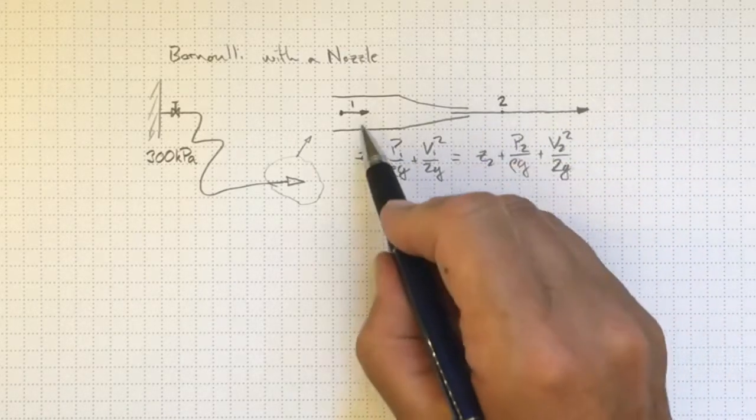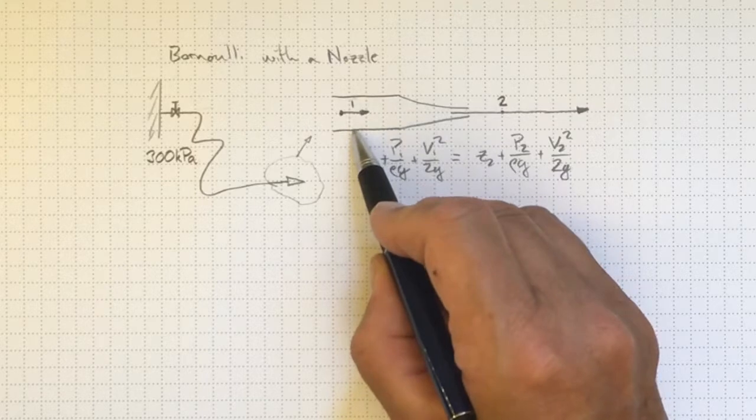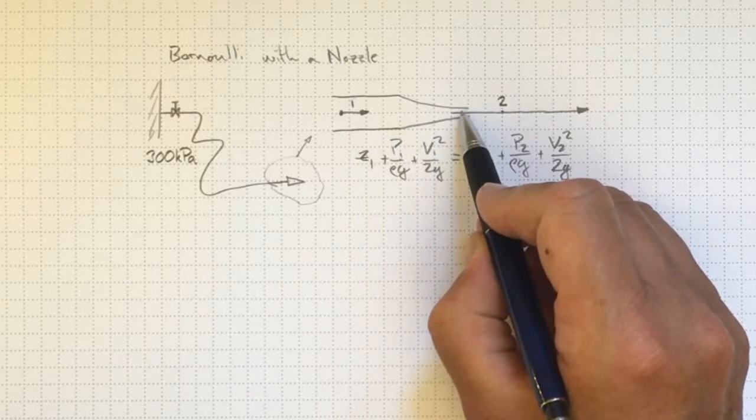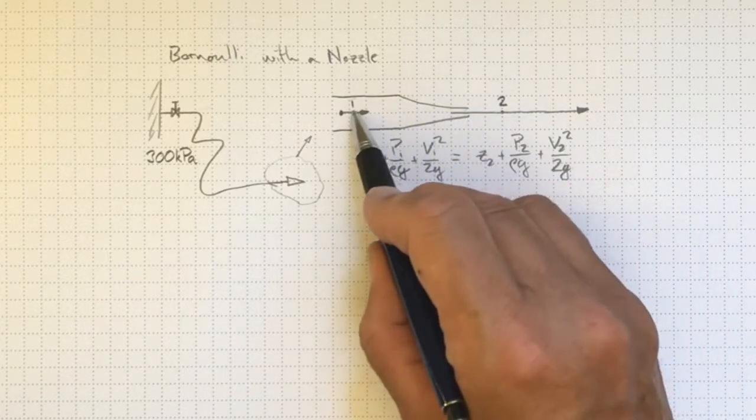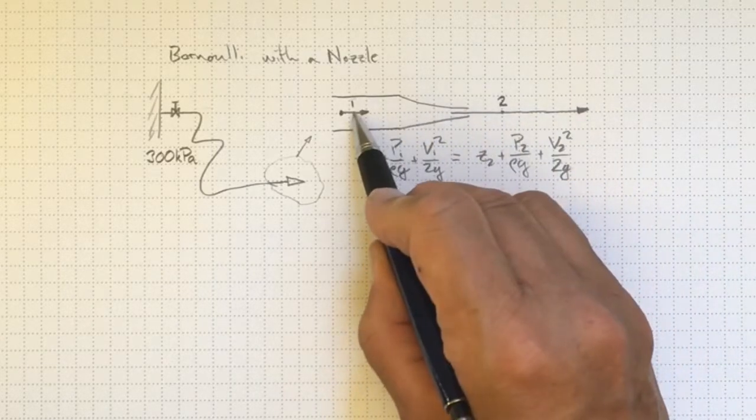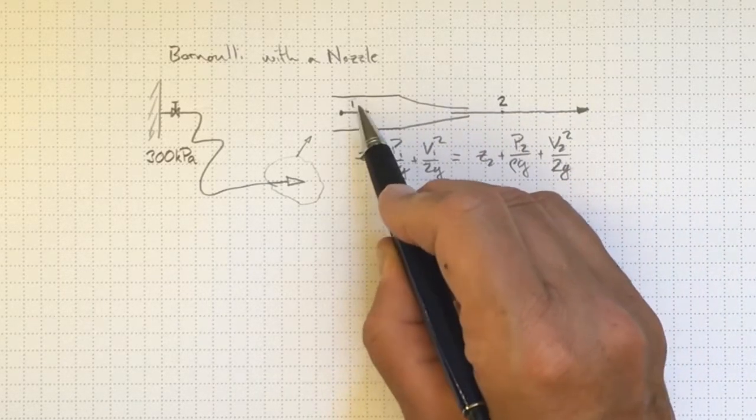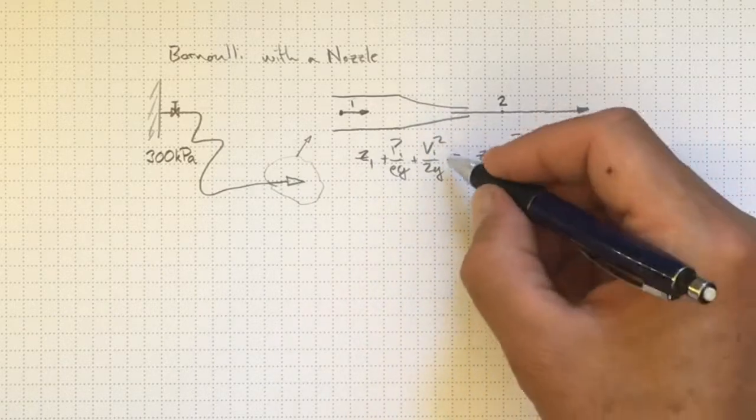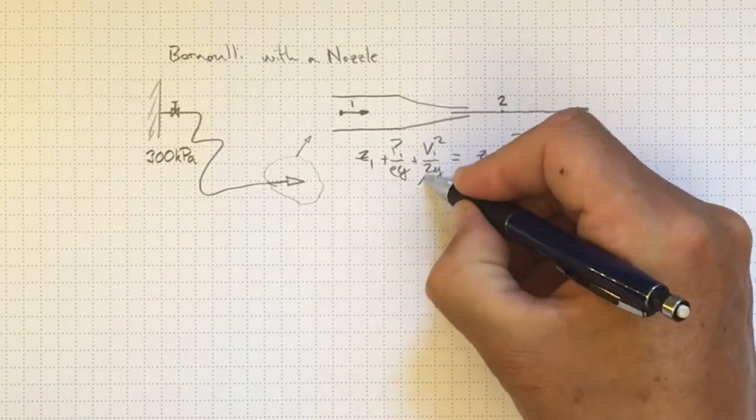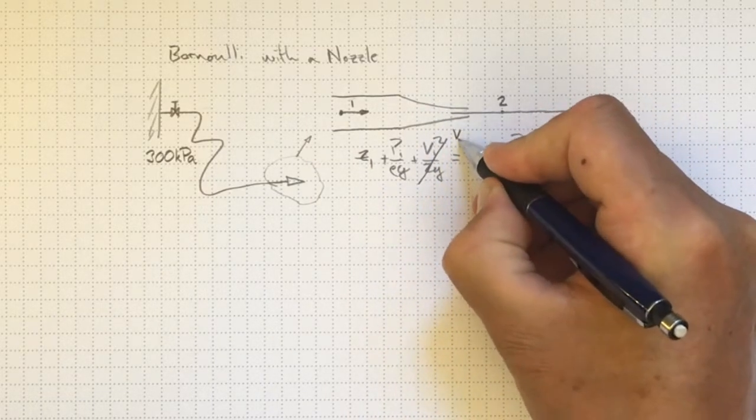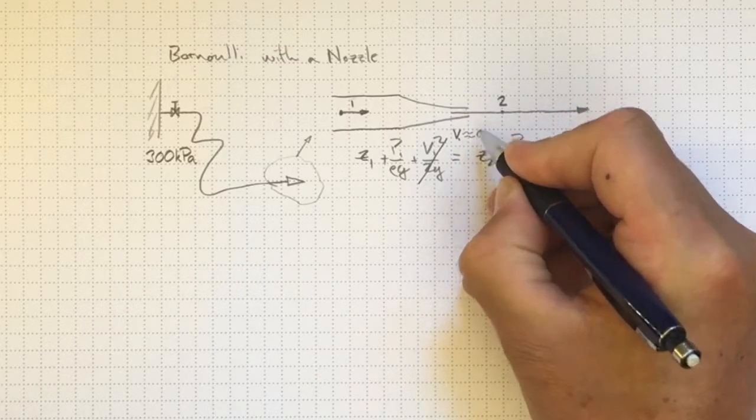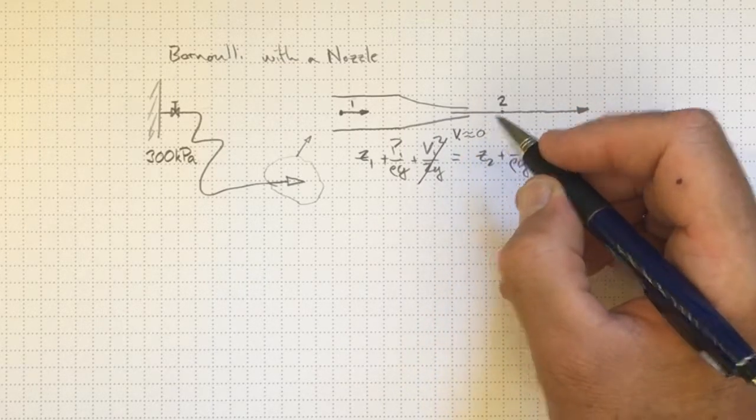Now if we assume that this hose is really large compared to the outlet diameter of the nozzle, we can say that v1 is going to be much smaller than v2, or at least certainly v1 squared is going to be much smaller than v2 squared. So we'll start off by saying that v1 is approximately equal to 0. It isn't actually, but it's close.